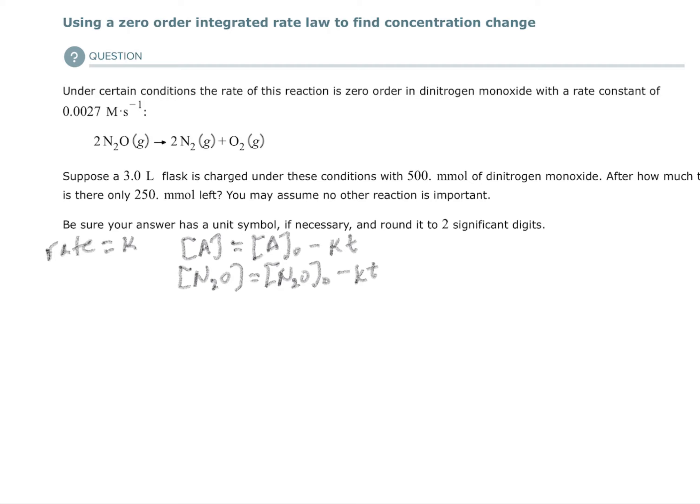You start with 500 millimoles in three liters. I already see a red flag here. The brackets mean molar concentration, and molarity is moles over liters. I don't like millimoles, so I'm going to write it up here: 500 millimoles. I want to get rid of millimoles, so I'm going to put millimoles on the bottom and moles on the top. There's a thousand millimoles in one mole.